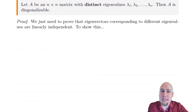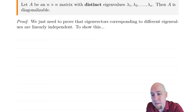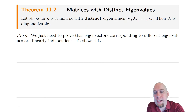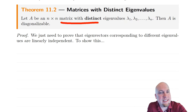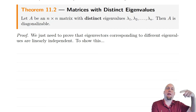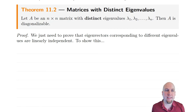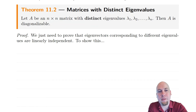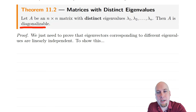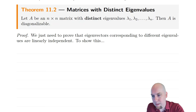We're going to leach off of that theorem from last class. Instead of proving that if it has n distinct eigenvalues then it's diagonalizable, I'm going to prove the contrapositive of that statement. I'm going to show that if A is not diagonalizable, then its eigenvalues are not distinct. That's a logically equivalent statement — if it's not diagonalizable, then its eigenvalues are not distinct. That's what we're going to prove.